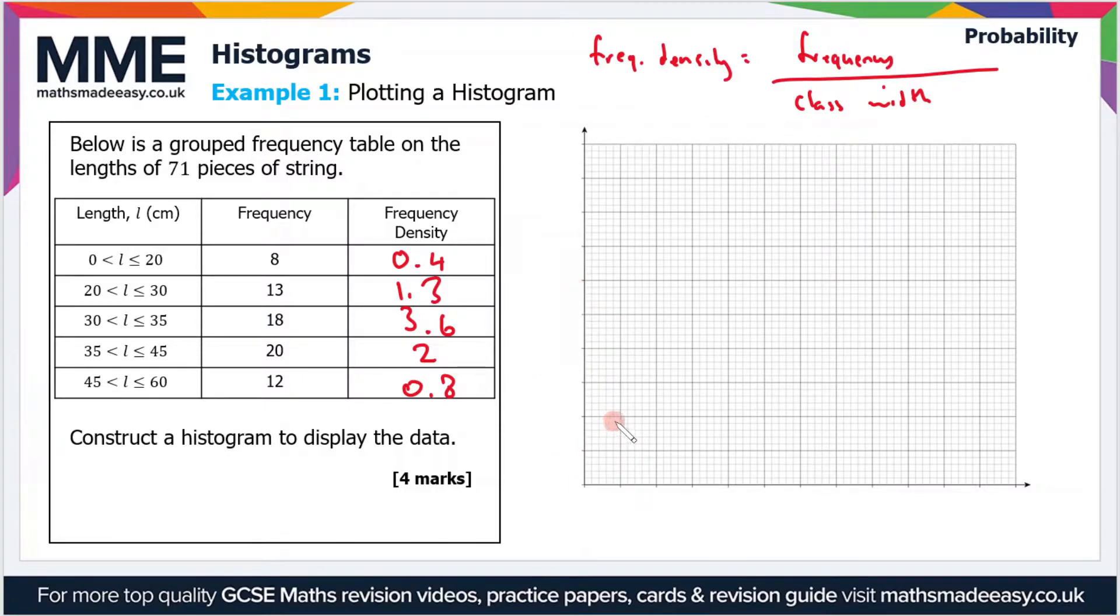I'm going to use one large square on this diagram, so that's five small squares across. That's going to represent 0.5. If I put the integers in, we need two large squares to get to 1, and then 2, 3, and 4.